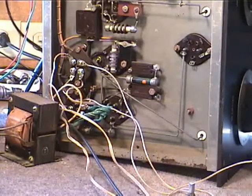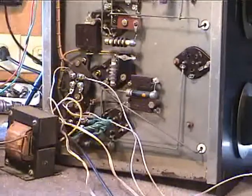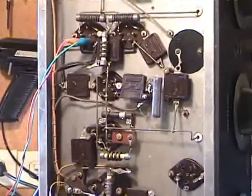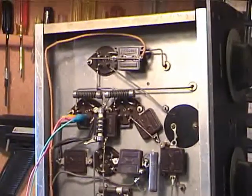We've put the transmitter up on its side to get into it a little bit easier. Here at the bottom is the crystal oscillator. You can see the filament transformer there on the left. We go up past the buffer, and then at the top is the final amplifier.